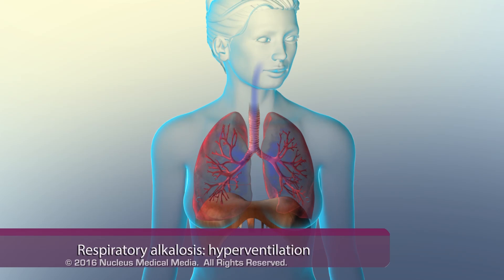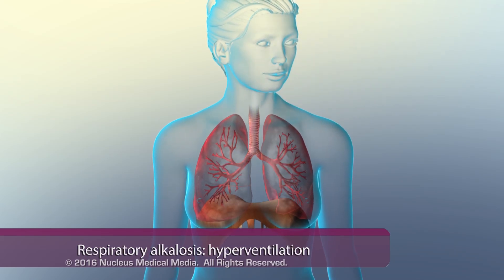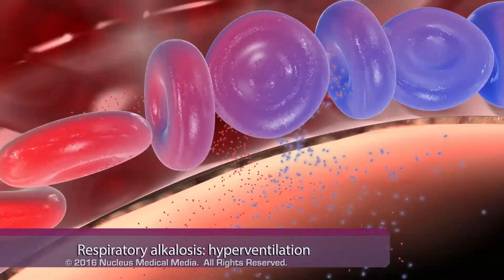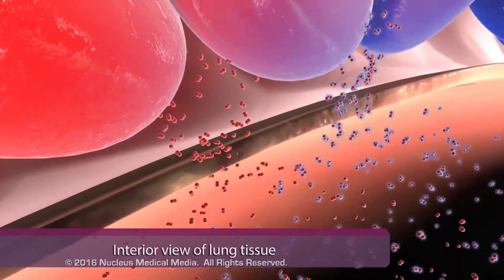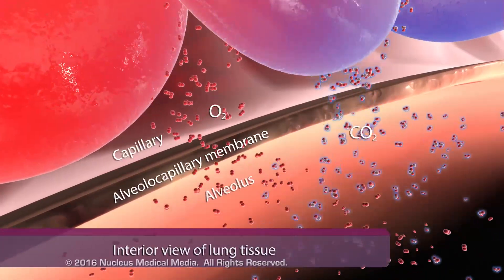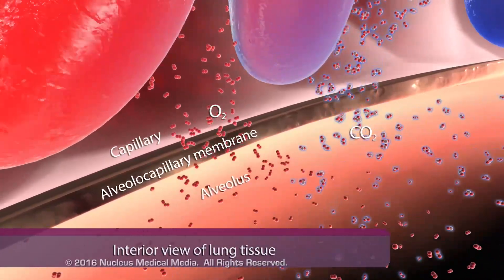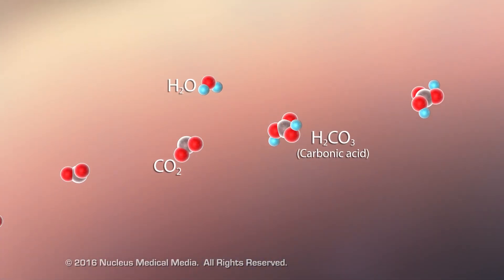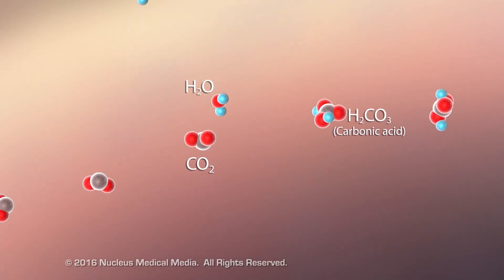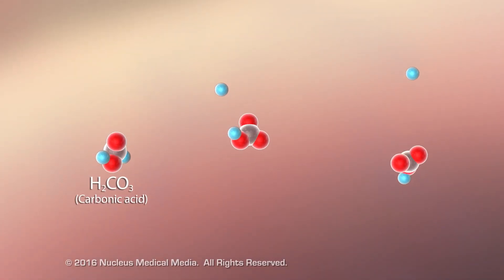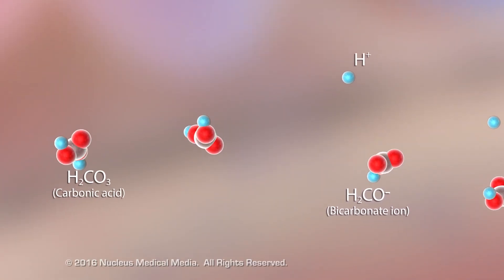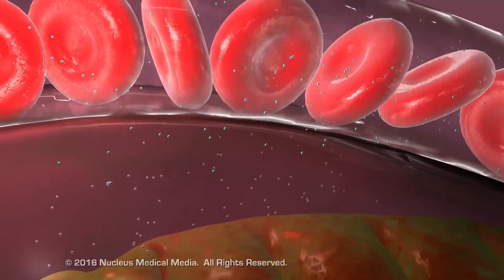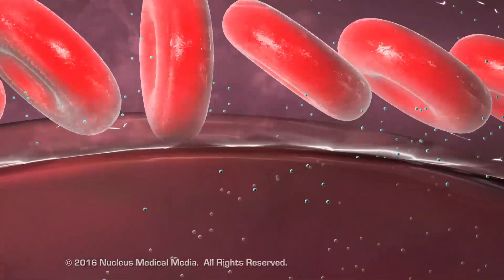Respiratory alkalosis occurs when hyperventilation causes too much carbon dioxide to be exhaled. If respiration removes carbon dioxide faster than the body produces it, a carbon dioxide deficit ensues. As a result, less carbon dioxide is available to combine with water to produce carbonic acid. Less carbonic acid dissociates into fewer free hydrogen ions. A deficit of hydrogen ions raises pH and causes alkalosis.